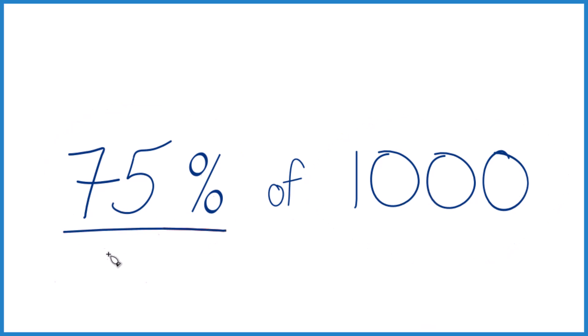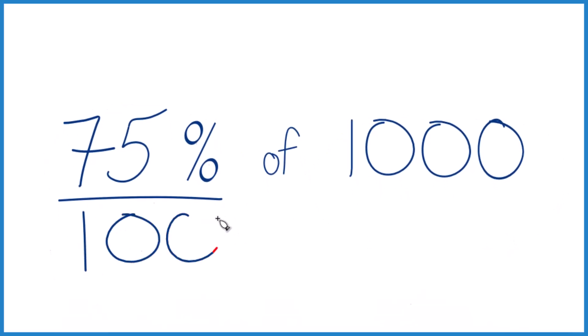75%, that's 75 per 100. So if we just had 100, that would be 75. But we have 1,000, so we move over one more place and instead of 75, it's 750. So 75% of 1,000, that's 750.